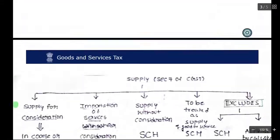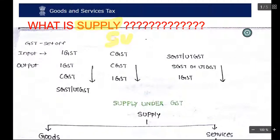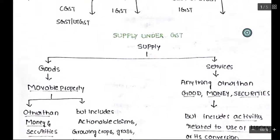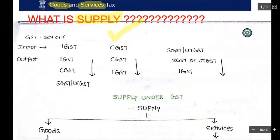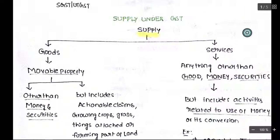In GST, GST is levied only with respect to goods and services. When there is a good or service, GST is levied only when there is a supply. So supply covers goods and services — only then is there a levy of tax on goods and services.